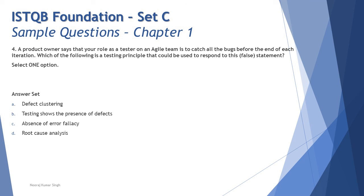So no need to get step into the options here. Defect clustering is about grouping of the defects. Absence of error fallacy is about not meeting the requirements. Root cause analysis is not at all a principle. So the right answer here is B: testing shows the presence of defects is the principle which we are following in order to make this statement a false statement which is not valid.